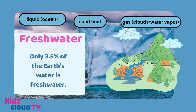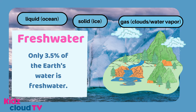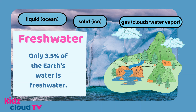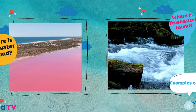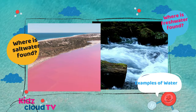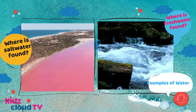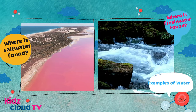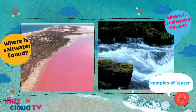Now let's talk about fresh water. Only 3.5% of the Earth's water is fresh water. Water has three forms: first, in liquid form, which is found in oceans; second, in solid form, which can be found in ice; and third, in gas form, which is in clouds or water vapor. Salt water is usually found in oceans or seas. Fresh water is found in lakes, rivers, or near glaciers.